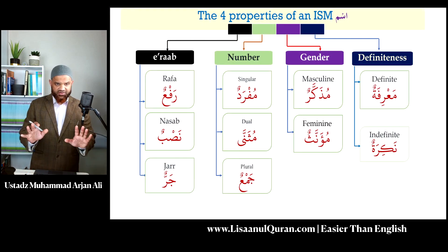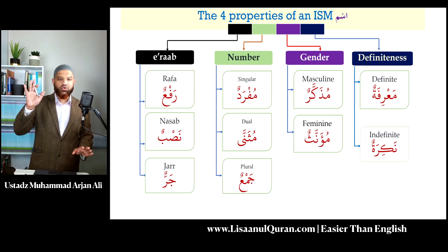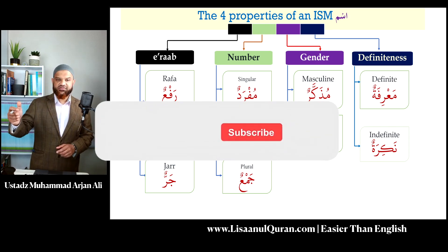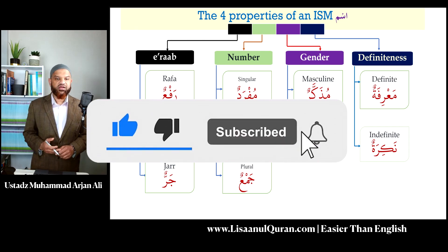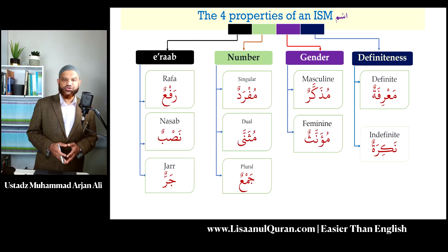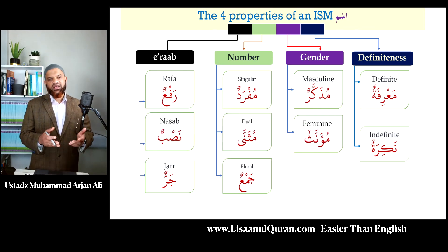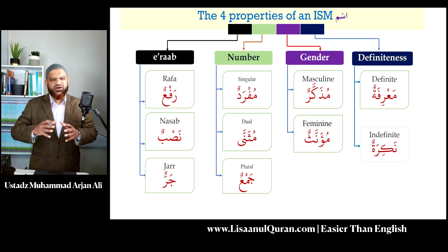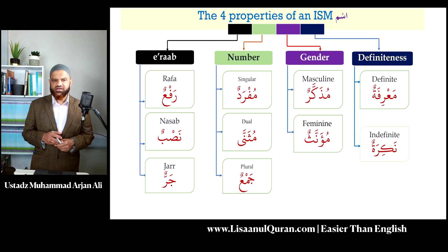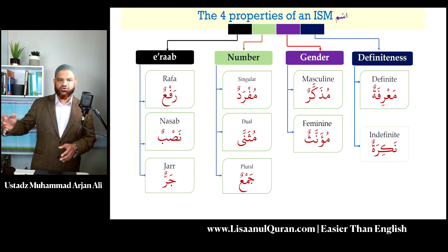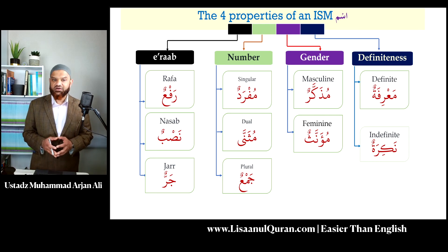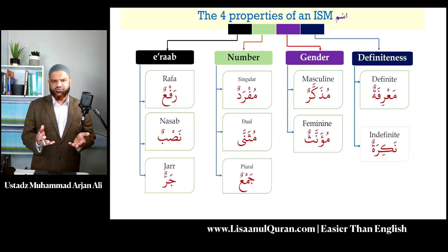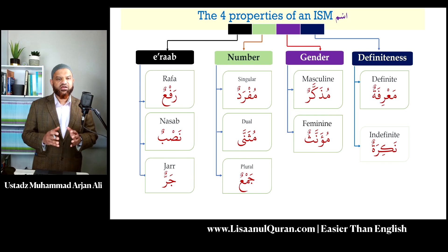A quick review of the four properties — alhamdulillah, you are now in a position where you know how to identify definiteness, how to identify gender from lesson three, and we have completed our discussion in lesson four on number. We also introduced rafa, nasab, and jar in the first session. The lessons are longer than planned, but I wanted to go through these points carefully because this is the foundation level. Get this right and the more complex stuff becomes easy. Get this wrong and things become unnecessarily complex. Please review these lessons — I hope and pray you're benefiting from them.